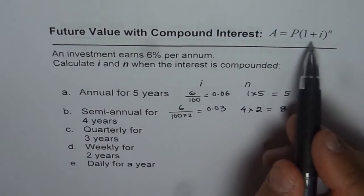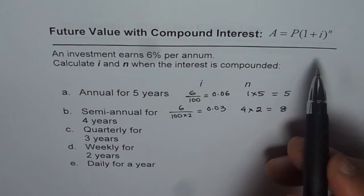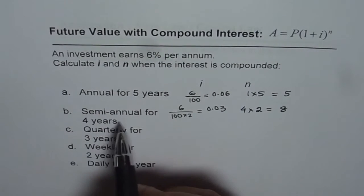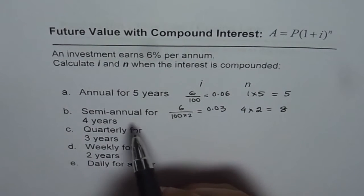So whenever you apply this formula for semi-annual you have to multiply the number of years by 2, because every year it is going to be compounded twice.